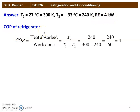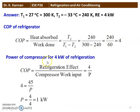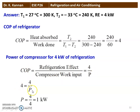COP = minimum temperature / temperature difference = 240 / (300 − 240) = 240 / 60 = 4. For a refrigeration effect of 4 kilowatt: COP = refrigeration effect / power, so 4 = 4 / P, giving P = 4 / 4 = 1 kilowatt. The power required to drive the compressor is 1 kilowatt.